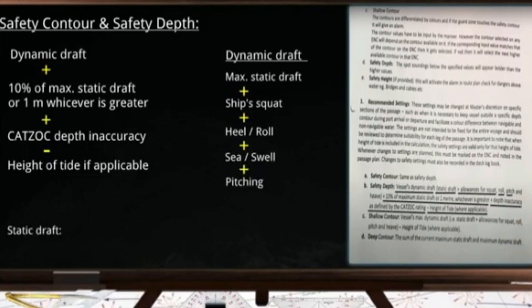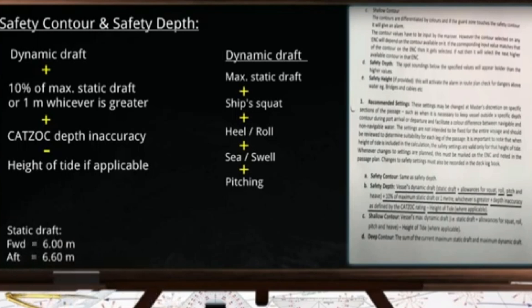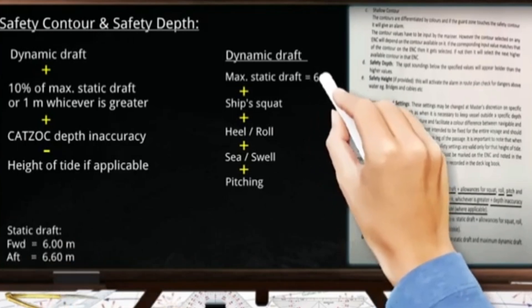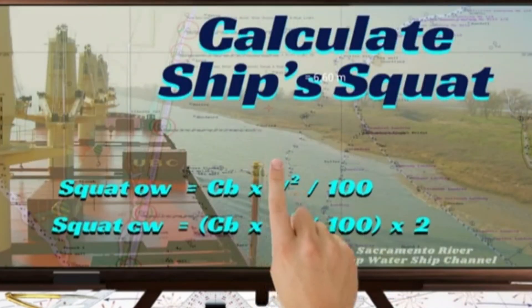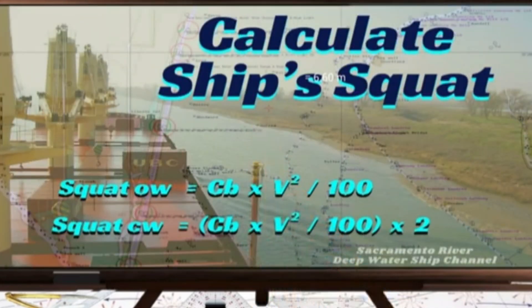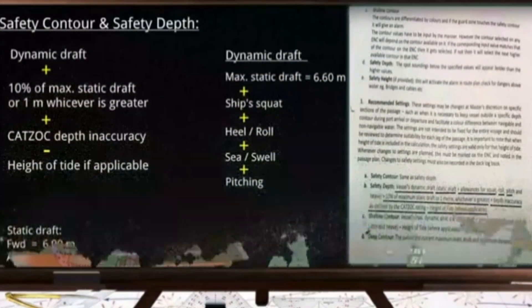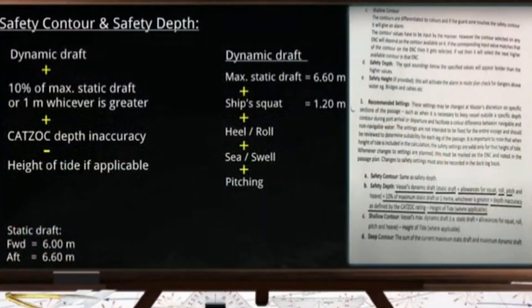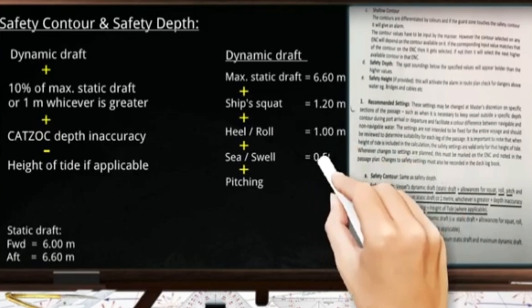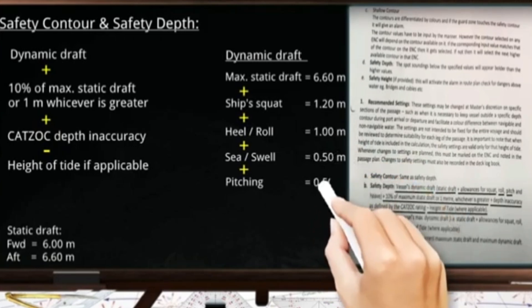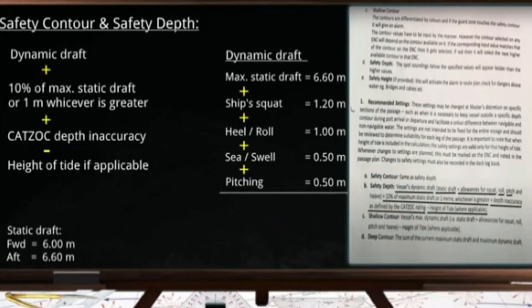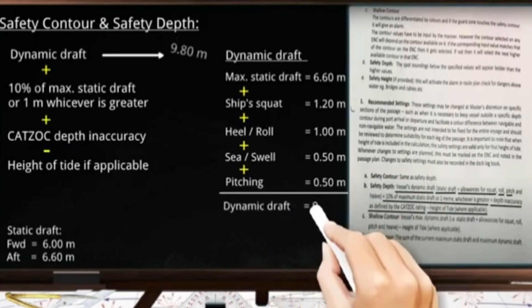Let us assume the ship's static draft forward is 6.0 meters and the aft draft is 6.60 meters, so the maximum static draft is 6.60 meters. For the squat, let us assume it is 1.20 meters. For the heel, swell, and pitch, it will depend on sea conditions. Let us assume heel is 1.0 meter, swell is 0.5 meter, and pitch is 0.5 meter. Adding these values, the ship's dynamic draft is 9.80 meters.